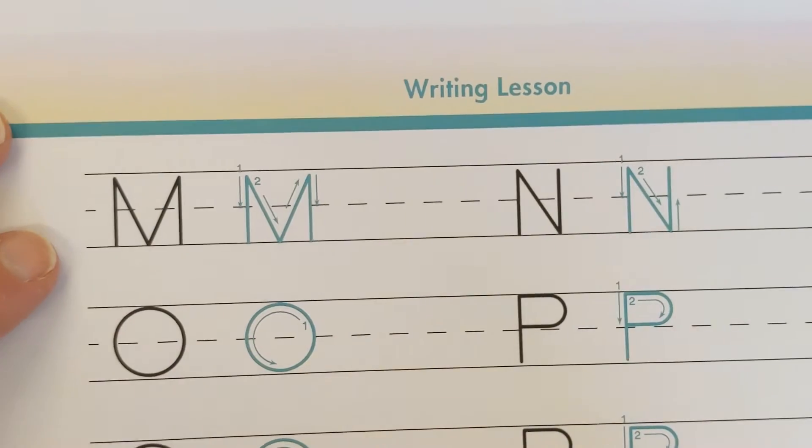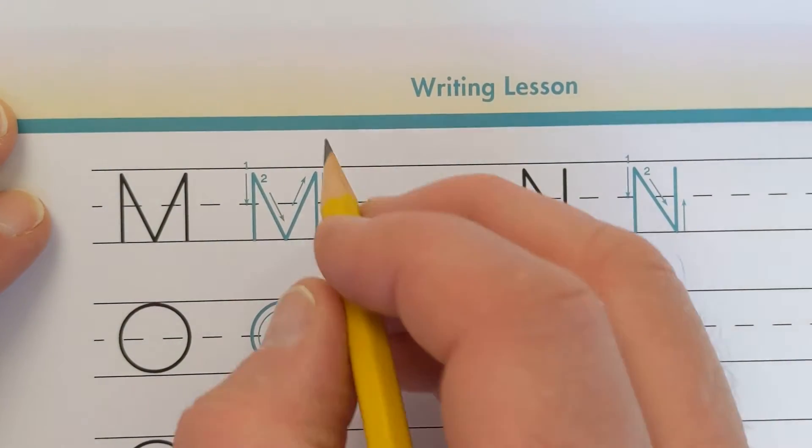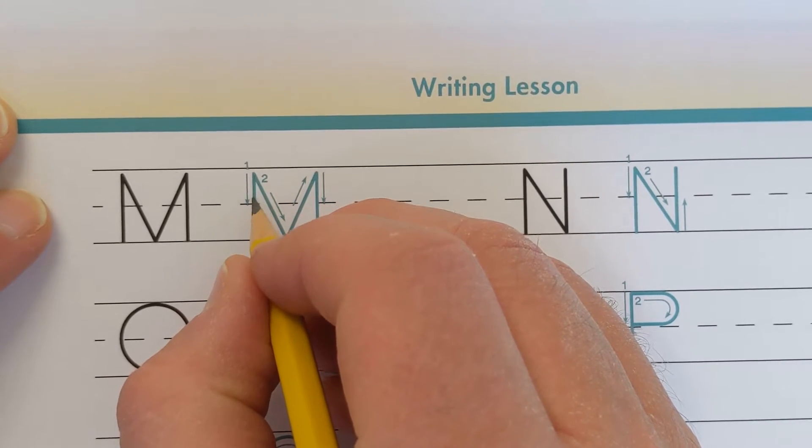Watch as I write the capital letter M. The steps are, beginning at the number 1, make a straight line going down.